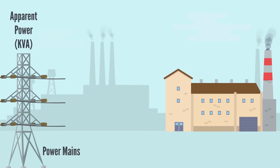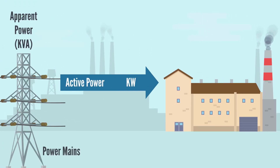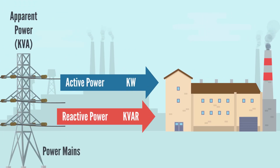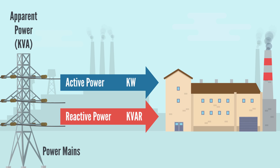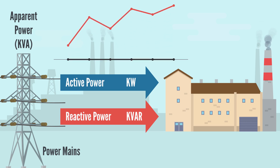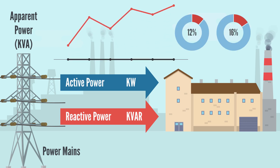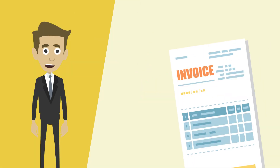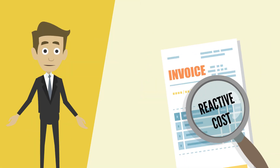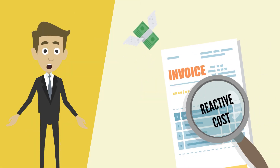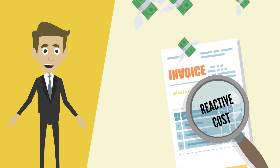Think of reactive power as the head of the total apparent power from the main network. But the distribution company does not want us to get more than a certain amount of head — well, reactive power in this case. If we do, then it's reflected on the bill as an additional cost.